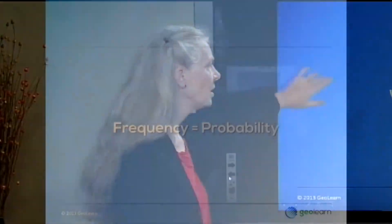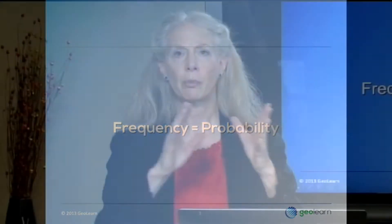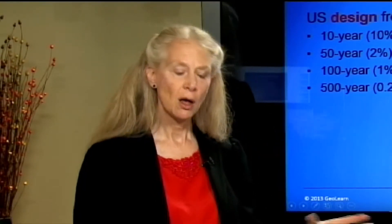For that, we go to the idea of what is the frequency of that particular level of flooding, that particular level of inundation. And when we're talking about that frequency, what is the probability of that amount of water occurring in a particular place at a particular time? So when we are talking about that, we, in the United States, talk about the design frequencies — the ones that we most normally use when we are designing in areas that are going to be subjected to flooding.